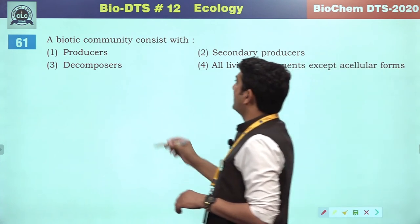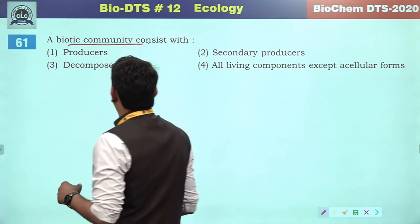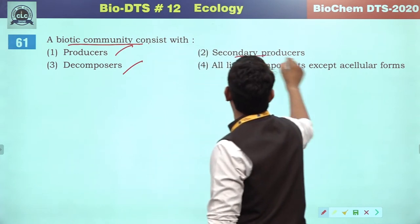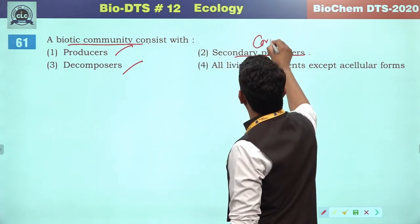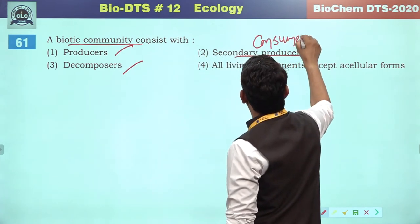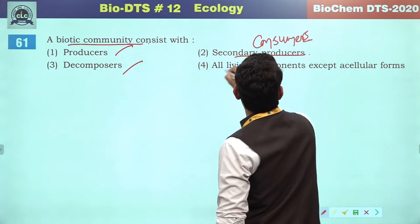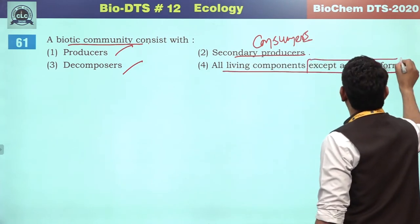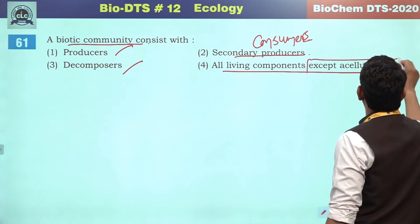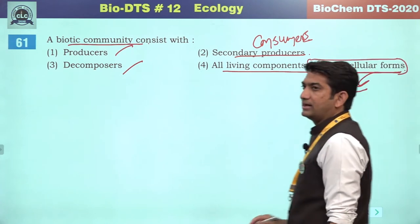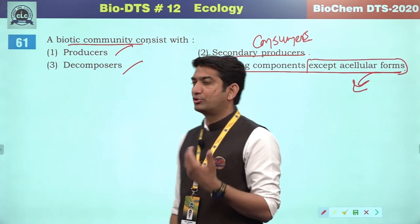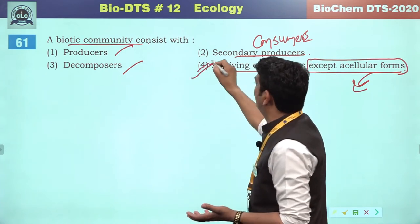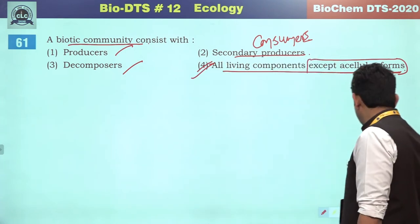A biotic community consists of — definitely it involves producers, decomposers and secondary producers (consumers). So the correct answer will be all living components, except acellular forms such as viruses, viroids and prions. The fourth will be the correct answer.